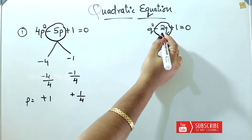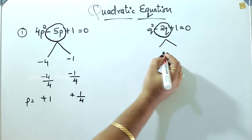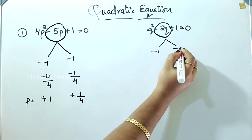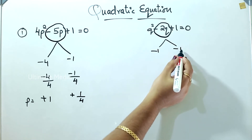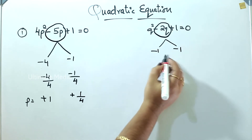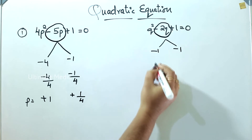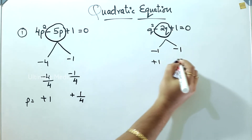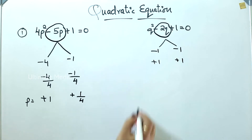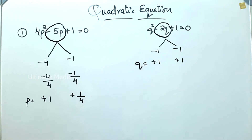Minus 2 is equal to minus 1 minus 1. Minus 1 minus 1 is equal to minus 2. Now I have to write here, then I will get the direct answer. Plus 1 plus 1. Then q is equal to plus 1 plus 1.